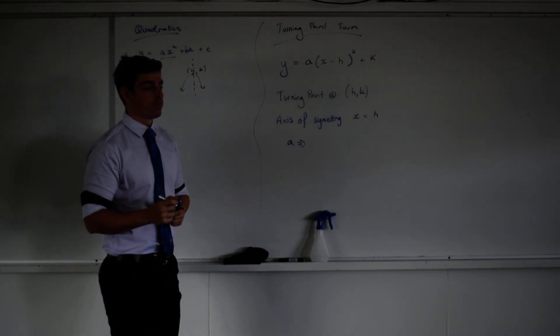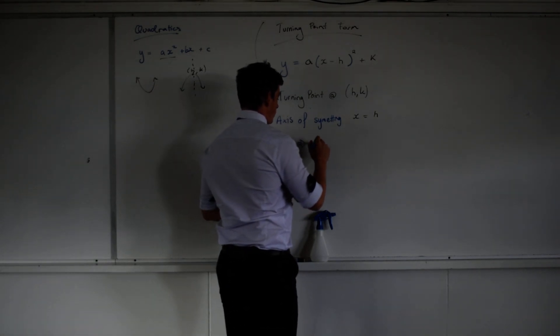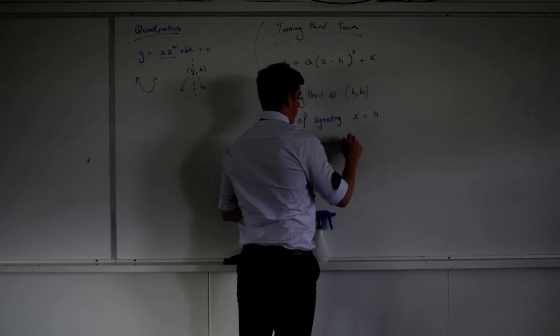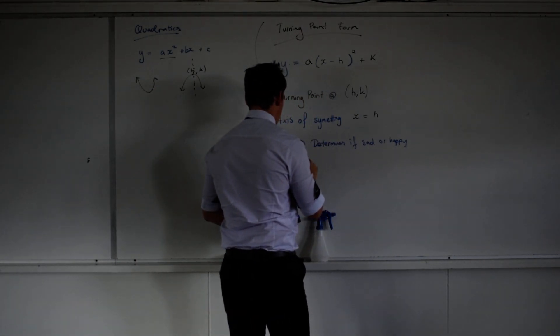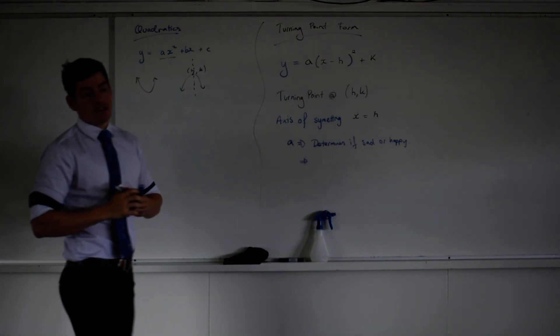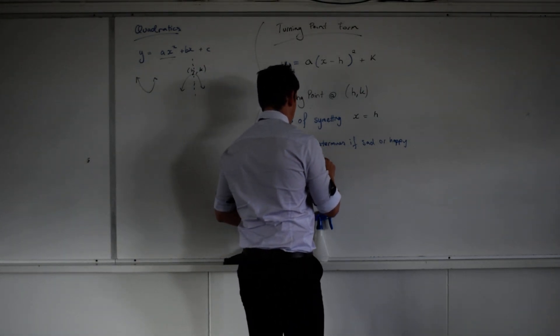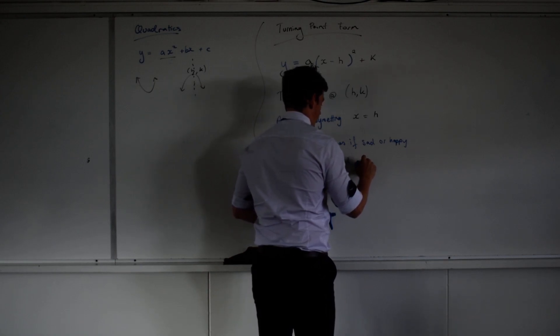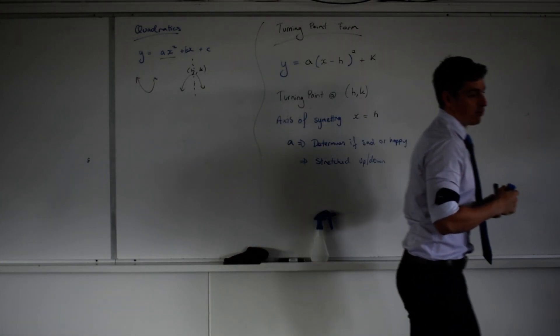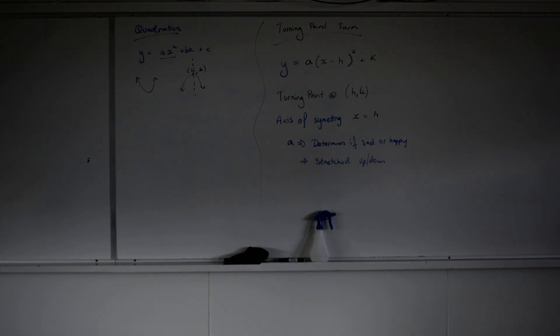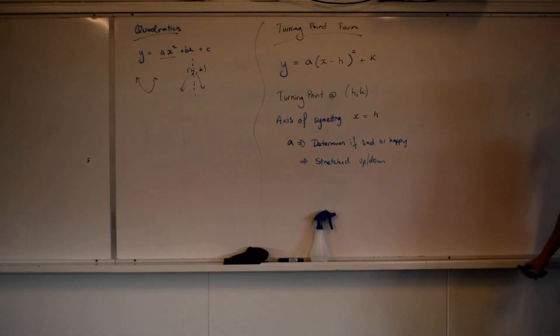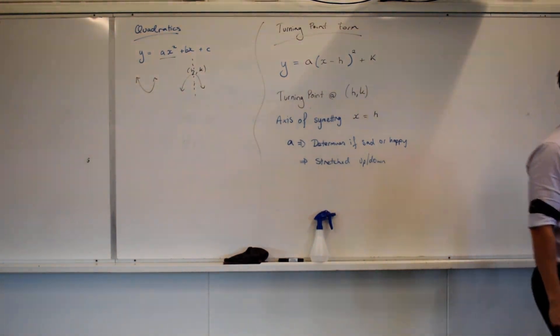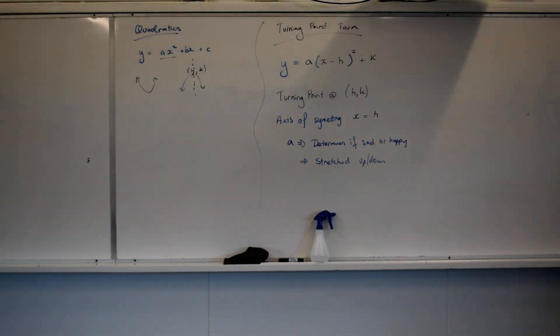What does the a value do? It determines if sad or happy. What else does it do? Yeah, dilation, which, again, the scientific community would call stretching up or down. Are we good with turning point form?